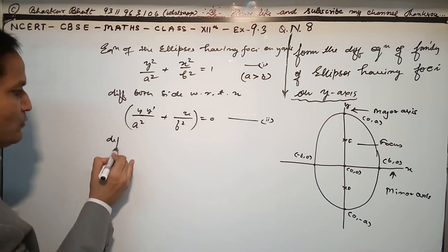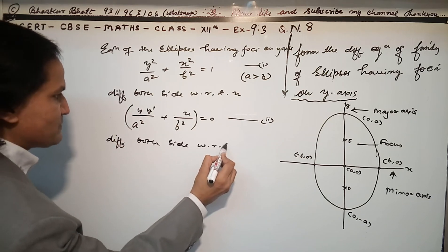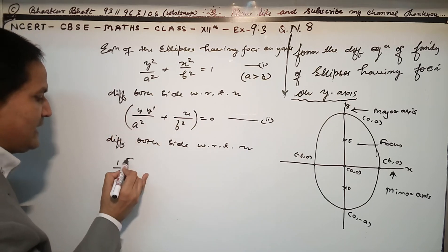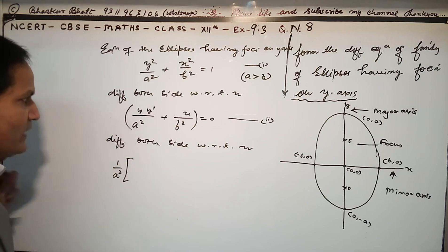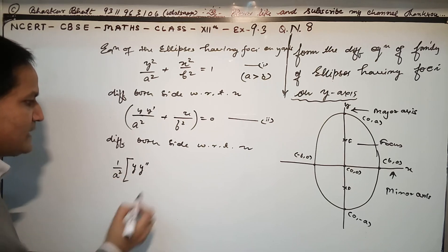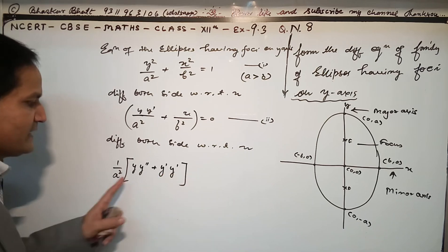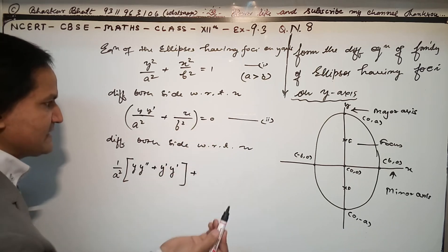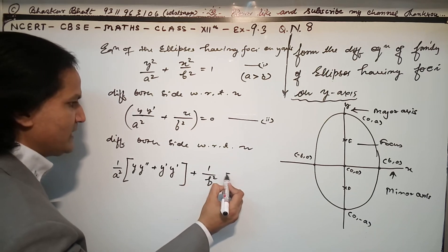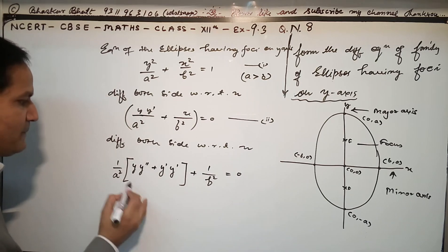Differentiating both sides with respect to x again: 1/a² remains outside. Since y and y' are two functions, we apply the product rule — first function times differentiation of second, plus second function times differentiation of first. Then 1/b² term equals 0.